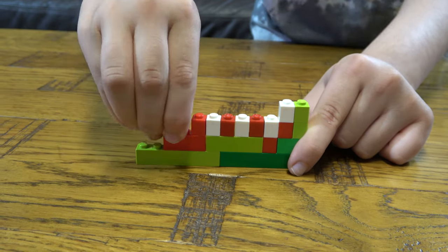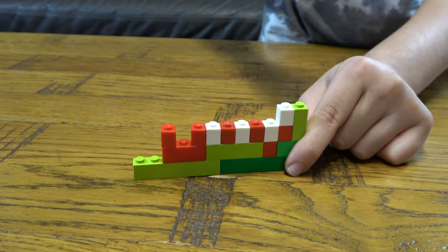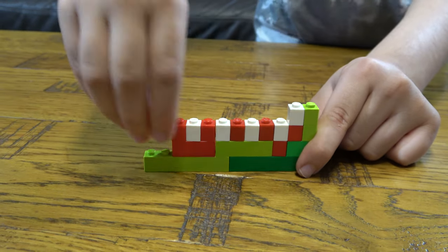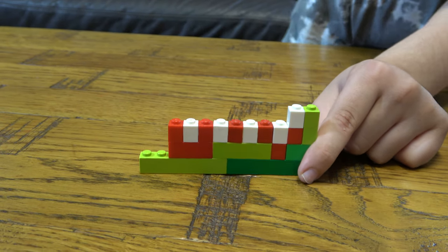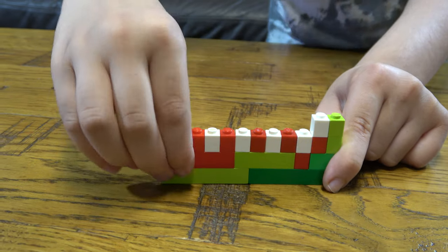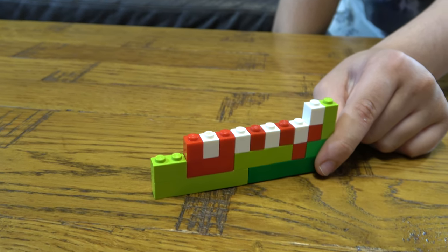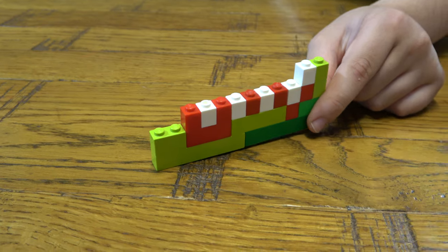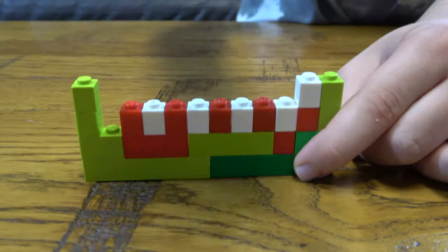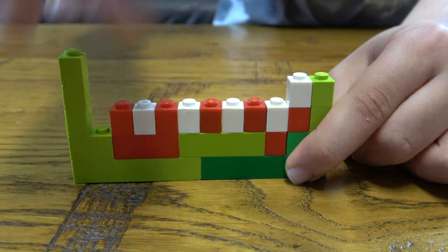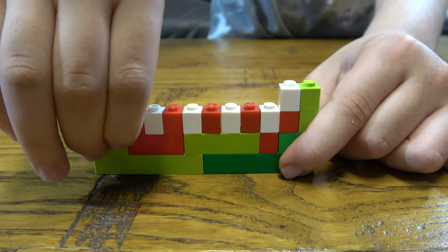Two of these here and another one here. And then next you get that there. Get three of these, place them on top of each other like so. Place that there.